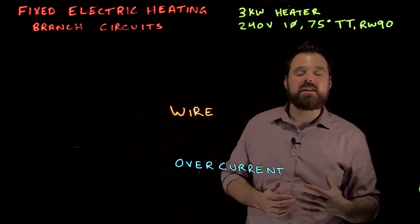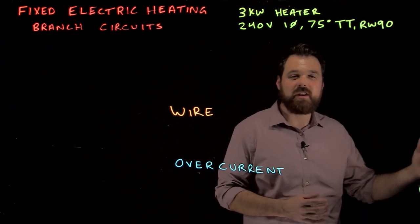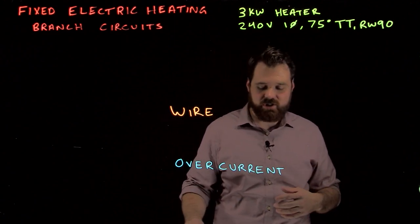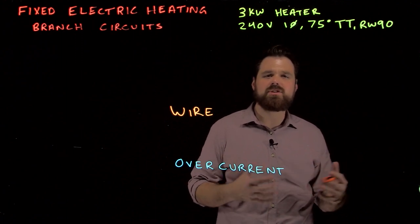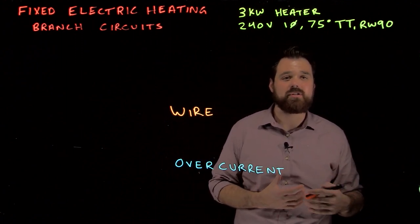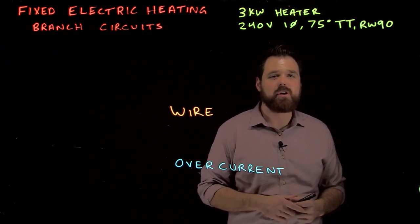So space heating loads or fixed electric resistive heating loads have their very own section in the code book. That section is section 62. And now section 62 has two rules that we are going to deal with when we're sizing branch circuit wire and a branch circuit overcurrent for heating loads.